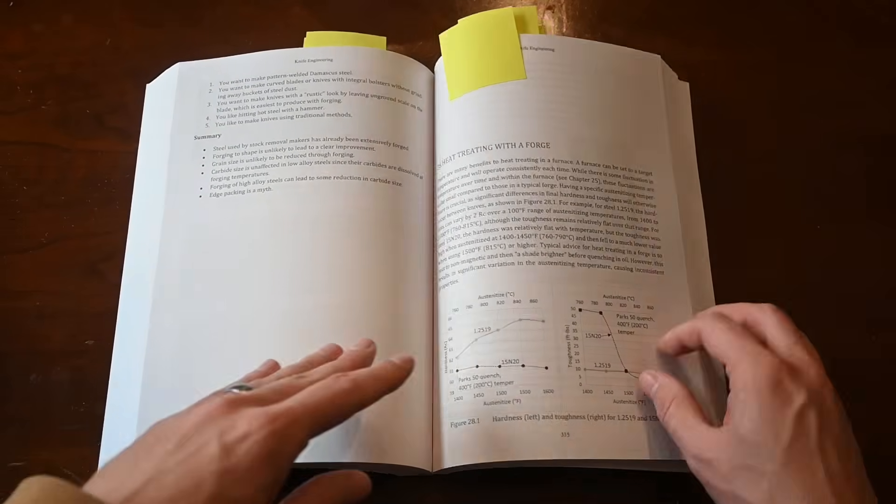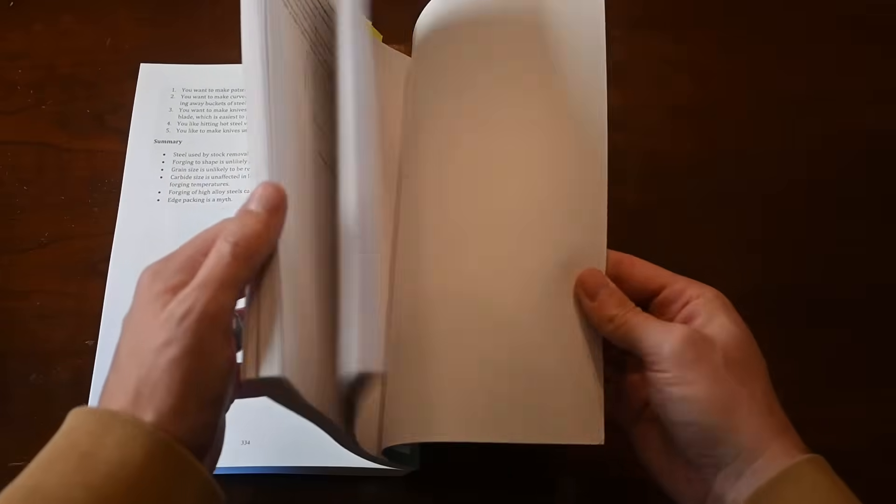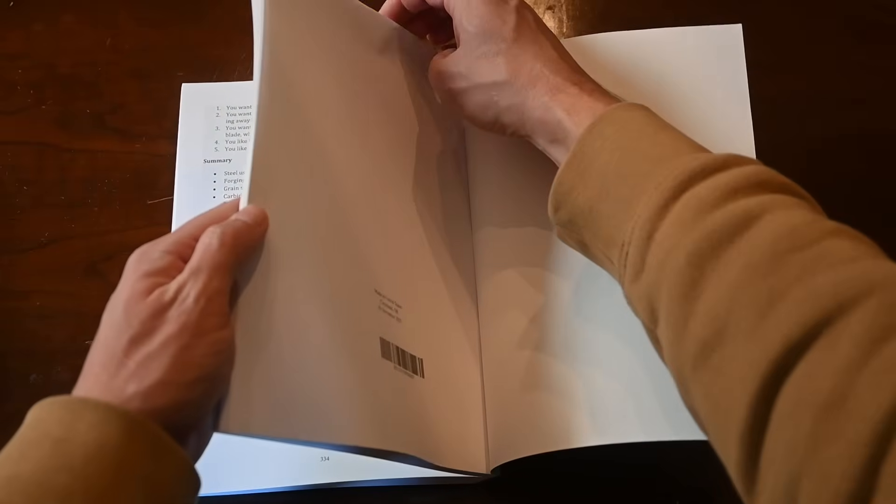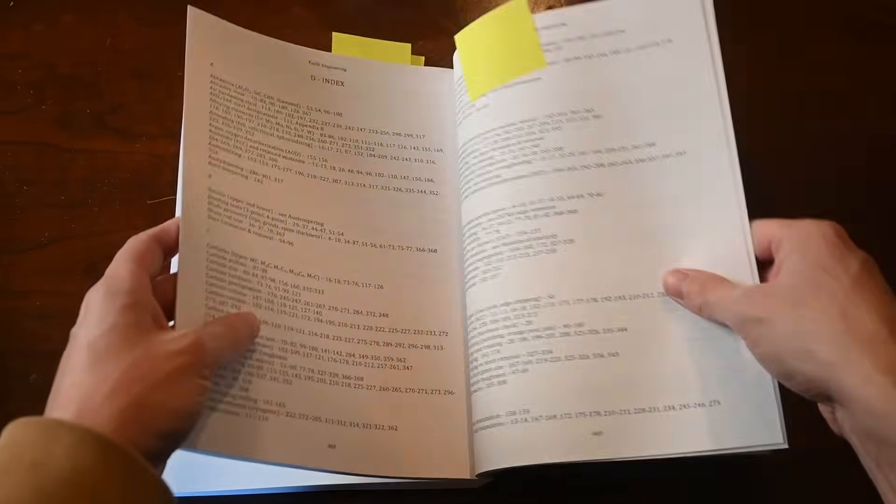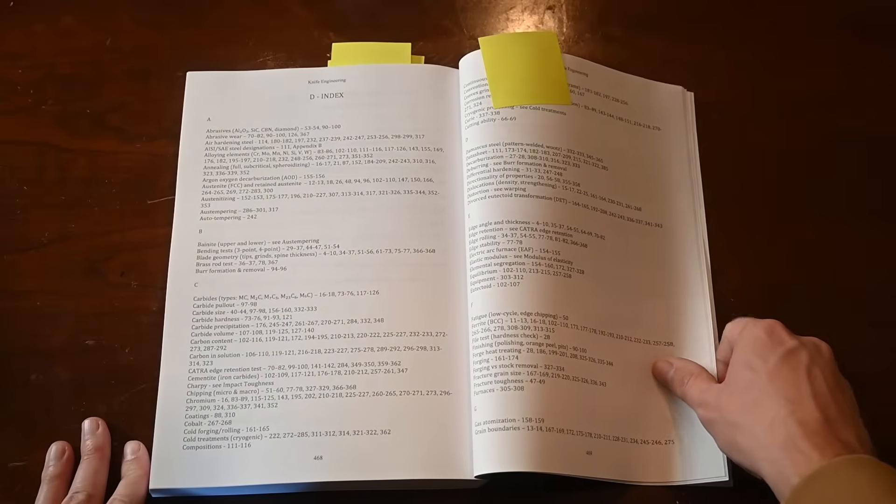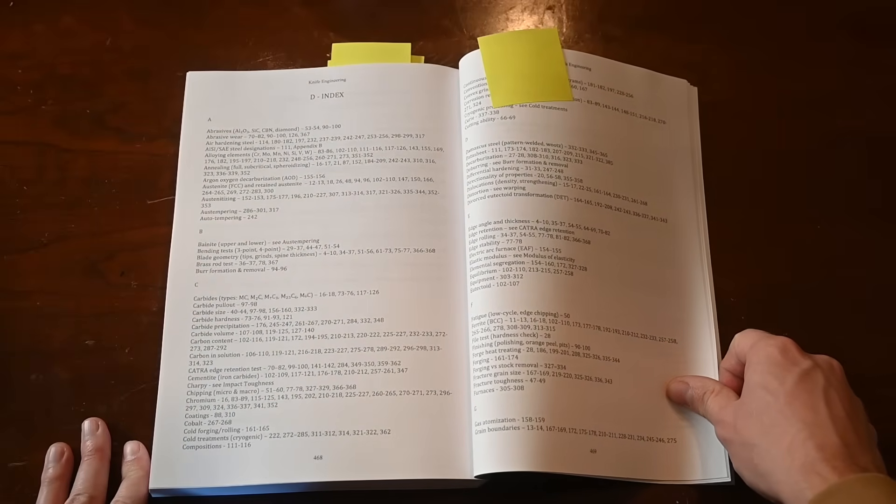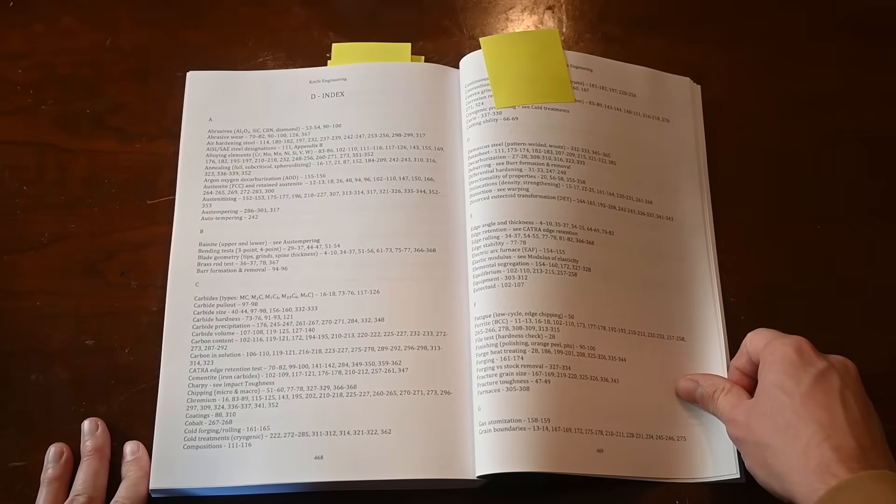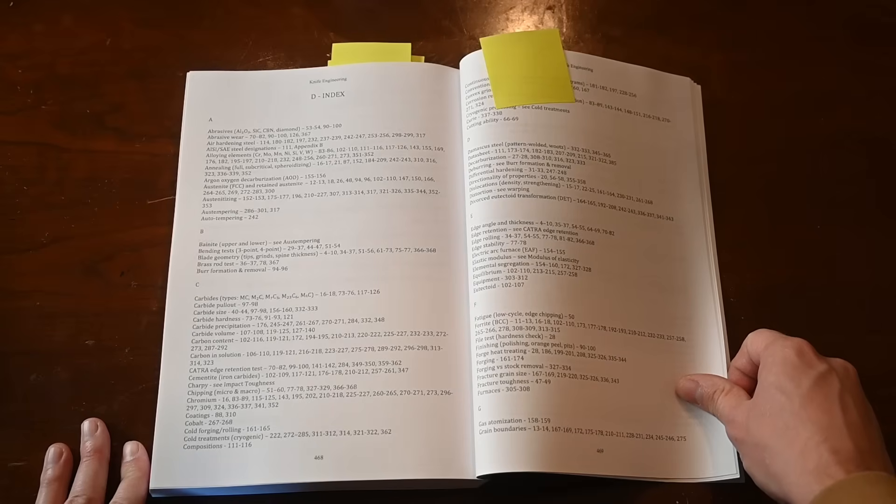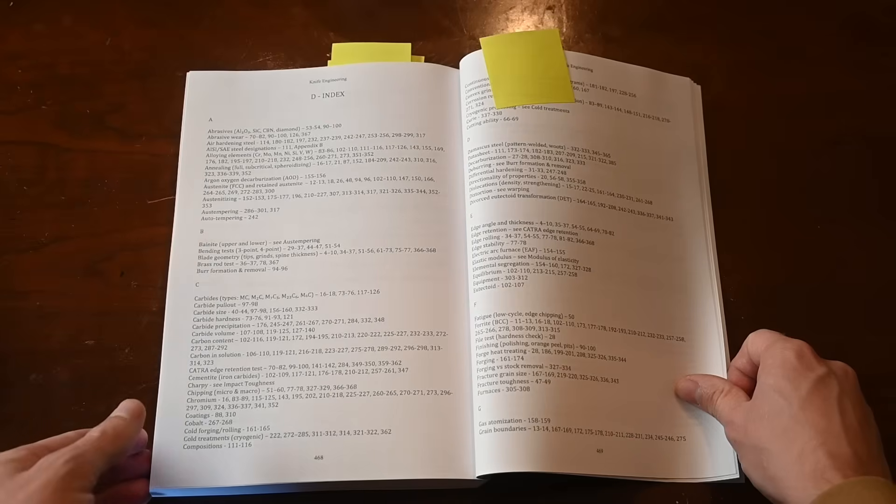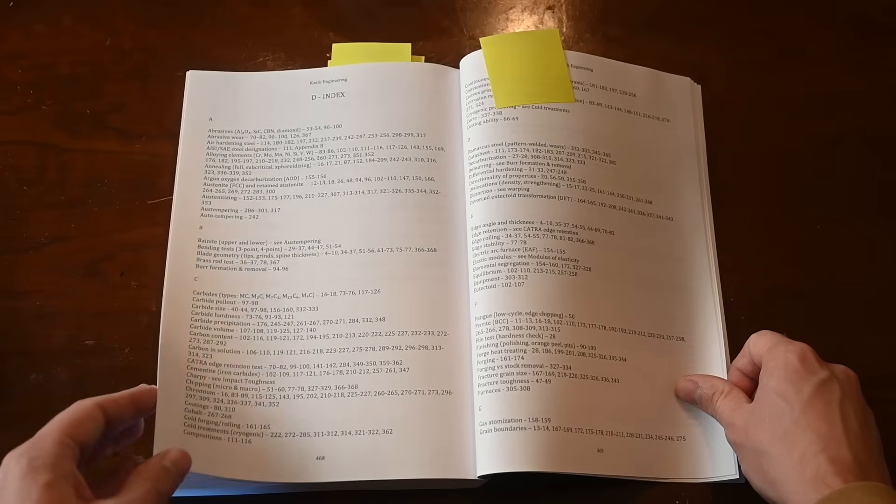Another major new feature of the book is one that a lot of people asked for in the first edition: an index. This makes it a lot easier to find different subjects. If you don't know what a term means, like austenitizing, you can look that up in the index and go to one of the first pages where I have a definition.